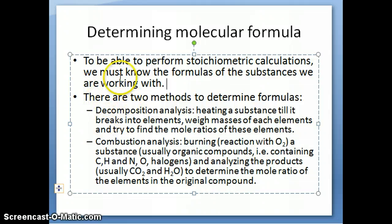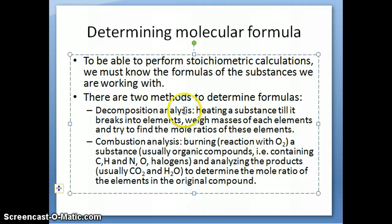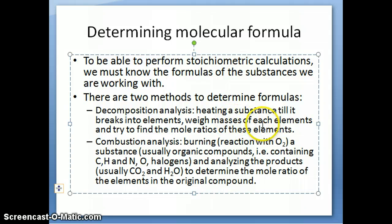This topic has to do with how you determine formulas. There are two experimental methods you can use to determine chemical formulas. The first one is called decomposition analysis. Decomposition analysis means you take a substance and heat it until it breaks apart into its elements. Then you weigh the masses of each element, convert those masses to moles, and find the mole ratios of the elements, which leads you to the formula. That's the easier type to understand.